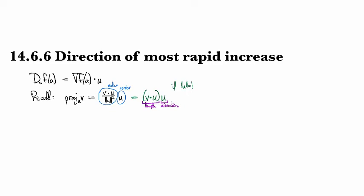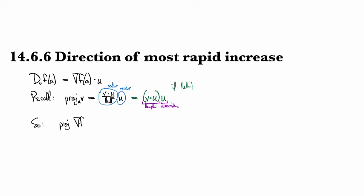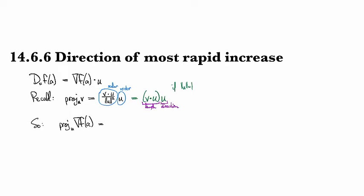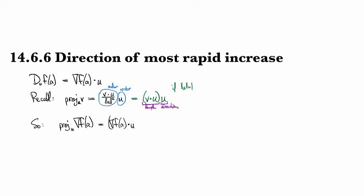All right, so if we look at the projection of the gradient vector, f of a, onto a unit vector, so a direction, yeah? Then this is going to be gradient f of a dotted with u times u.